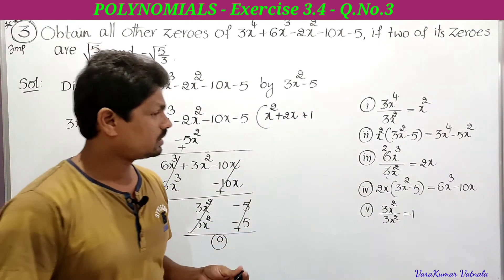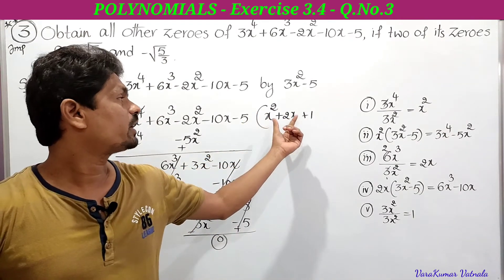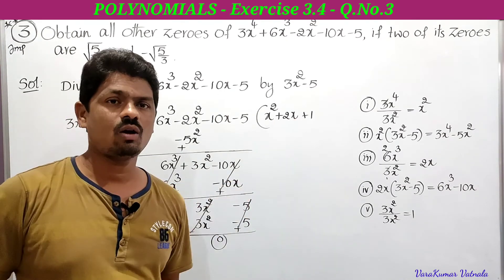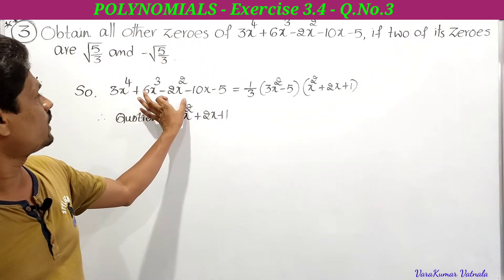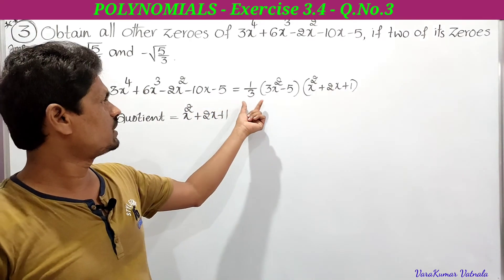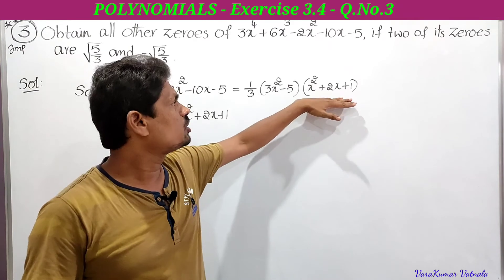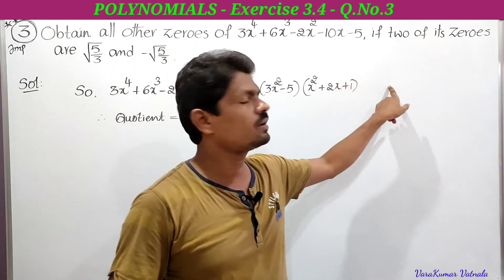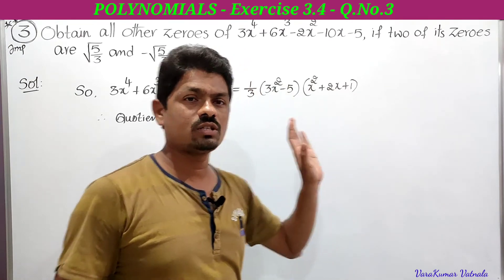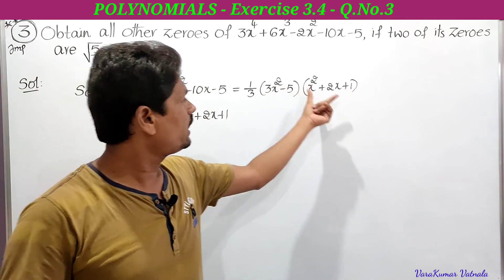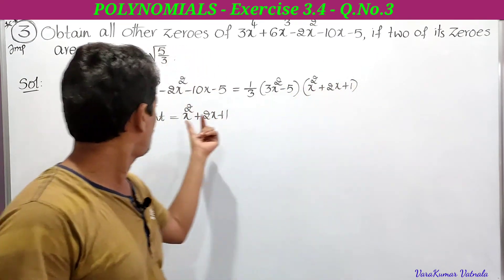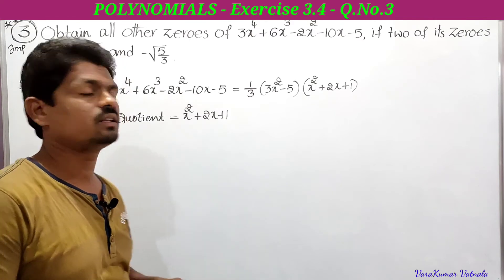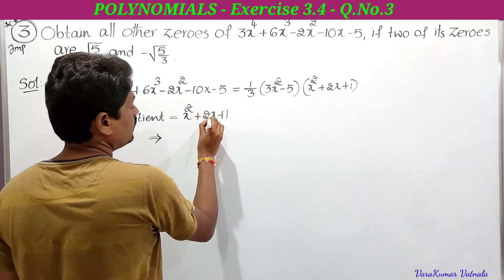The quotient is x² + 2x + 1. So 3x⁴ + 6x³ - 2x² - 10x - 5 = (1/3)(3x² - 5)(x² + 2x + 1). Since the remainder is 0, we write: dividend = divisor × quotient. Now we need to find the factors of x² + 2x + 1 to get the remaining zeros.